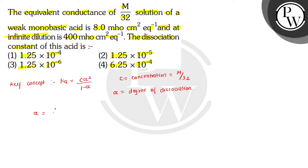Alpha equals molar conductance at concentration C upon molar conductance at infinite dilution. In this question, values of equivalent conductance are given. Since it's a weak monobasic acid, the molar conductance and equivalent conductance are equal.